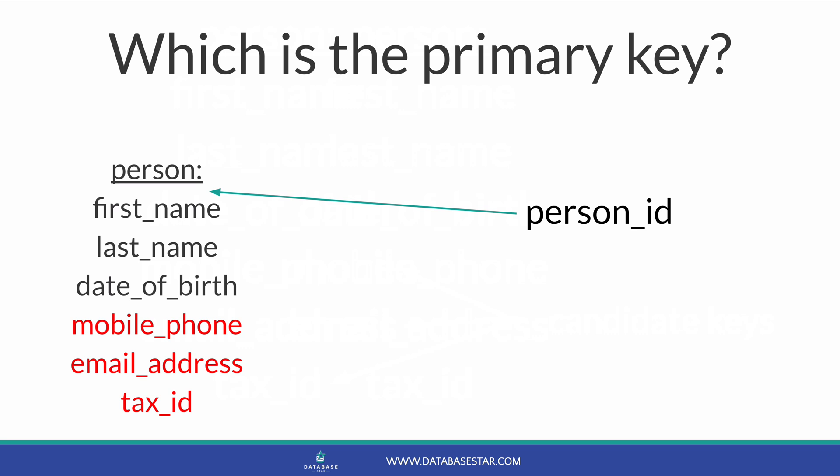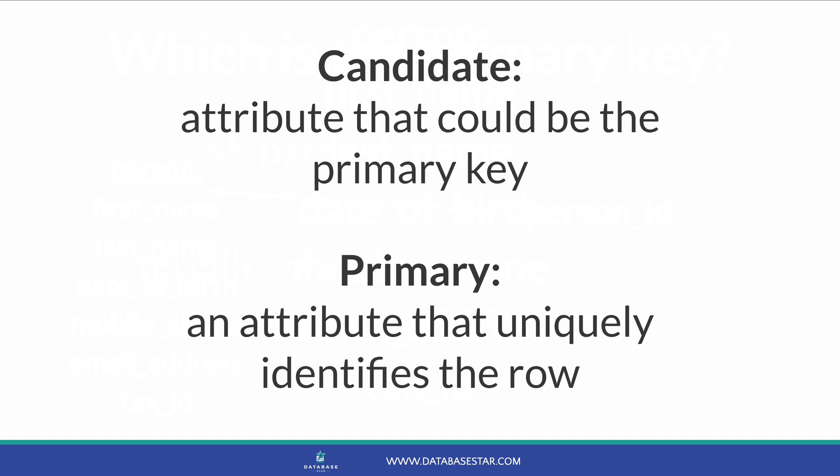This way I can define whatever rules I need for other fields. If we want to make the tax ID unique, we can, or we can make it not unique in case it's ever reused. The same applies for other fields. So a candidate key is an attribute that could be chosen as the primary key, and the primary key is a field that uniquely identifies the row.